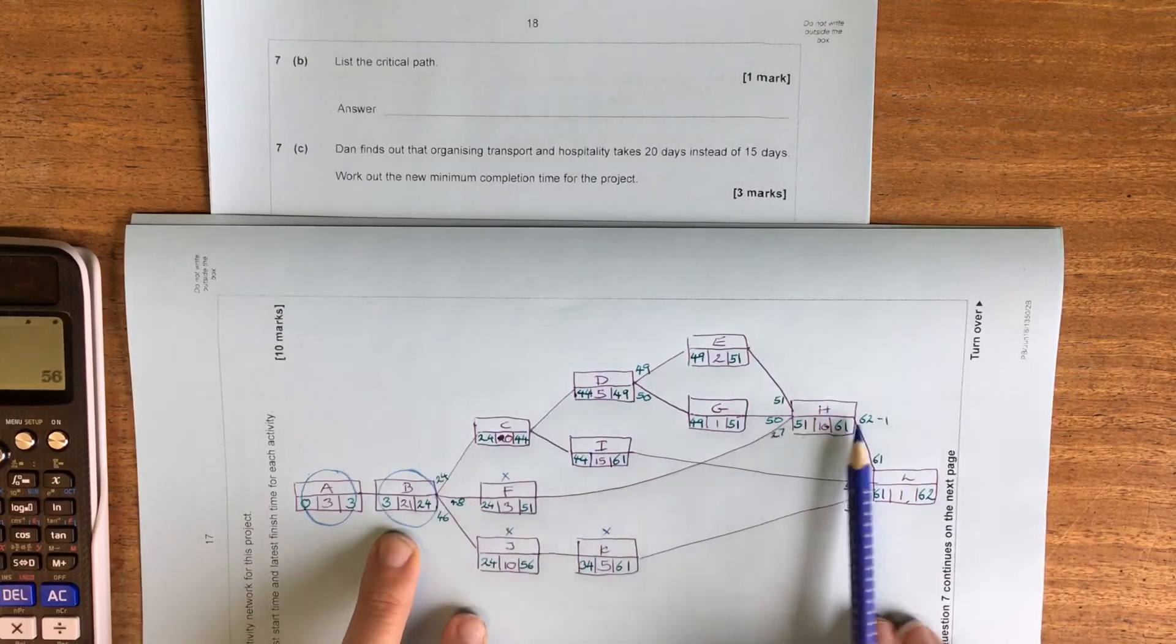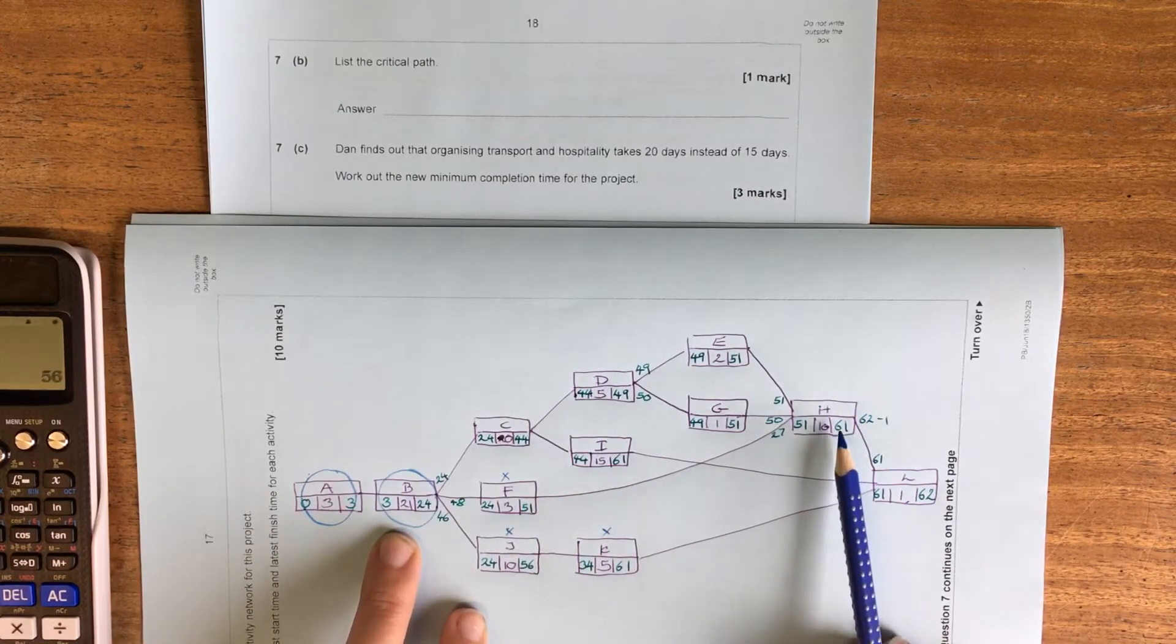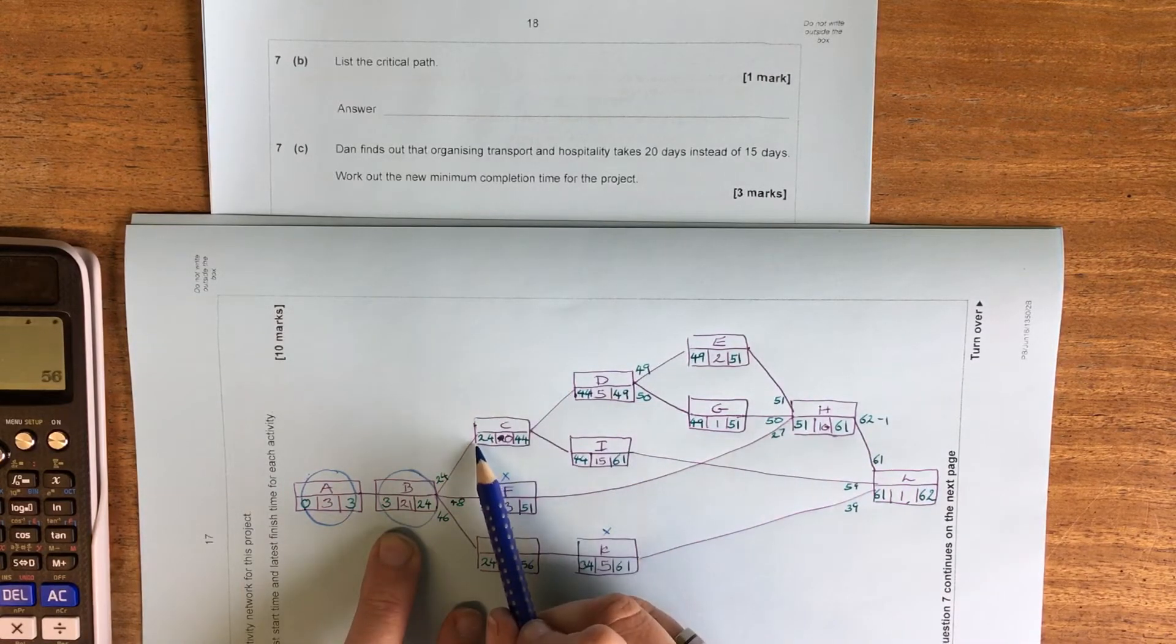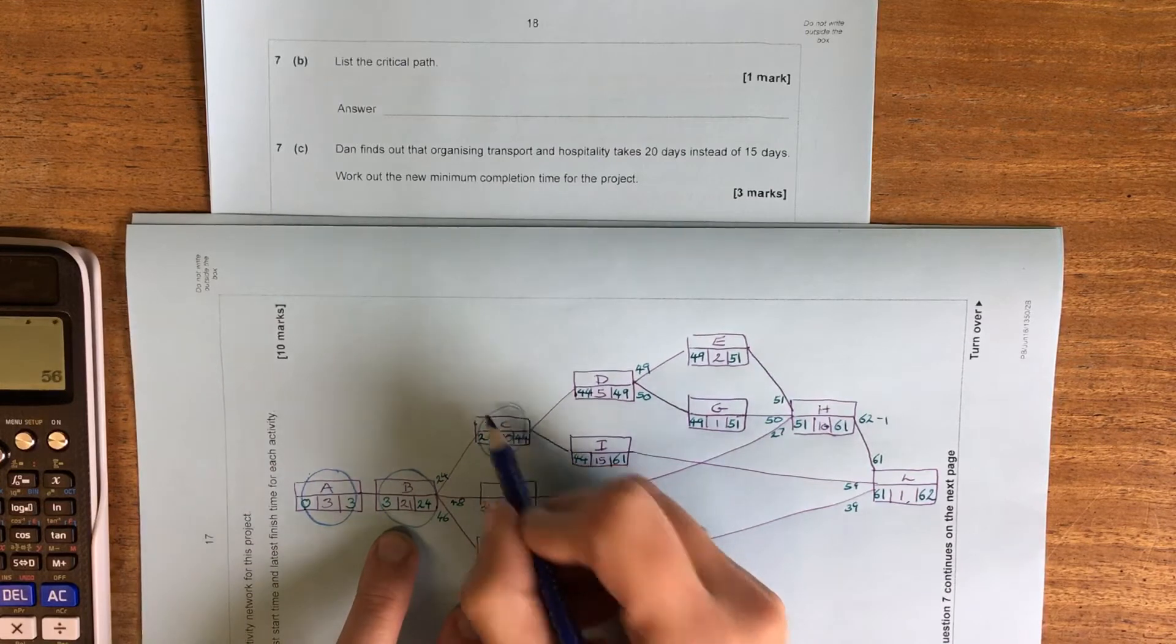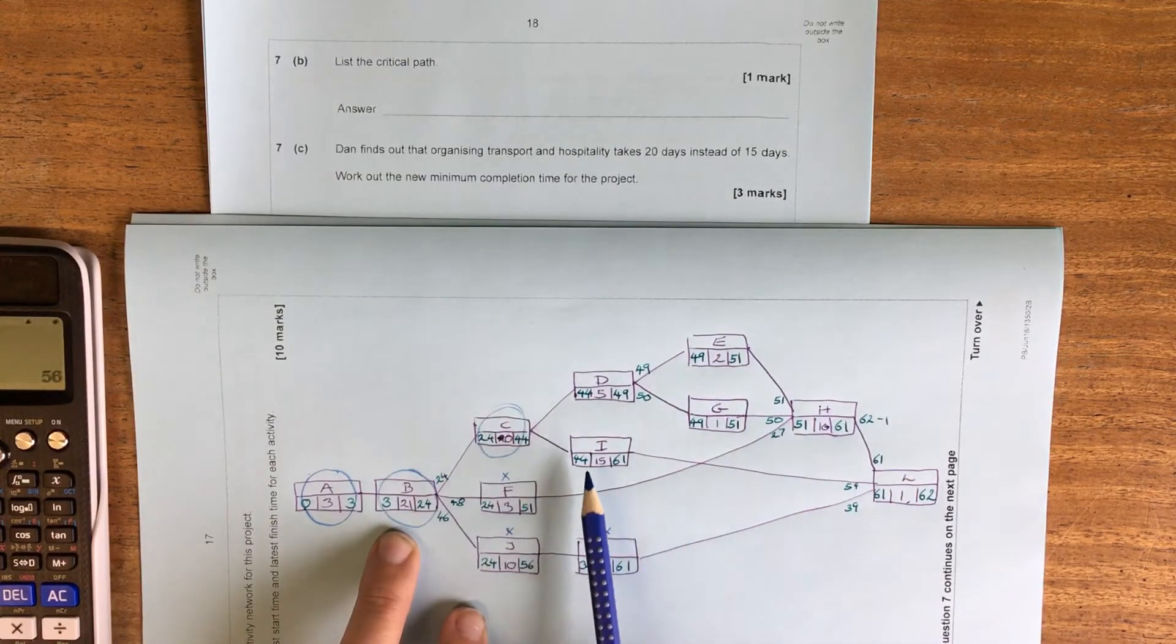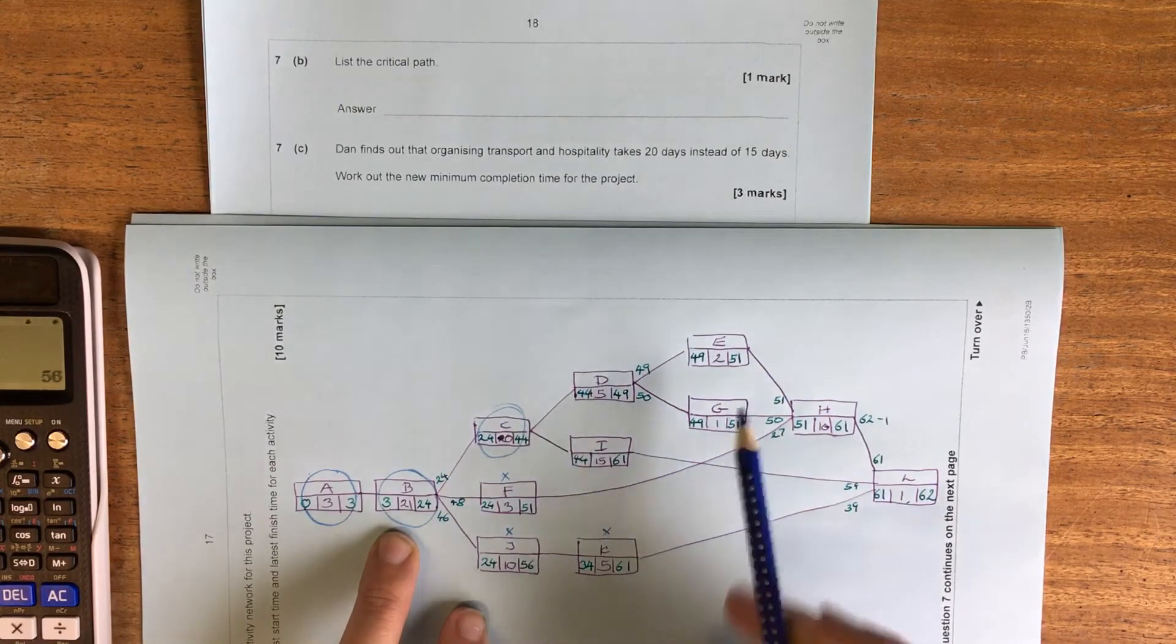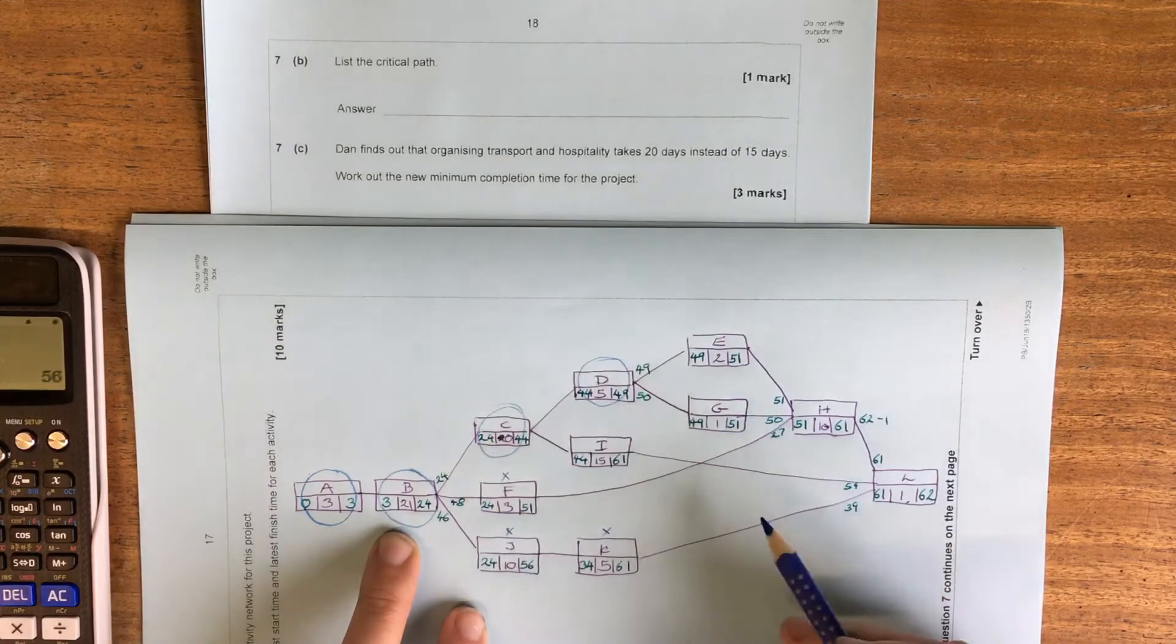The next one on this branch has got other things going into it so we need to double check that. So 24 and 20 gives us 44. So this one's critical. 44 and 5 give us 49. So this one's critical.